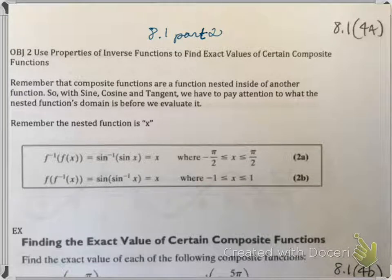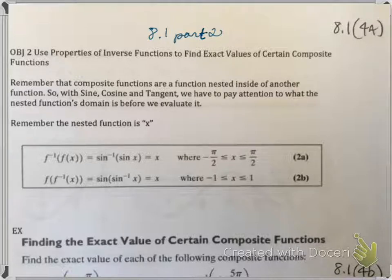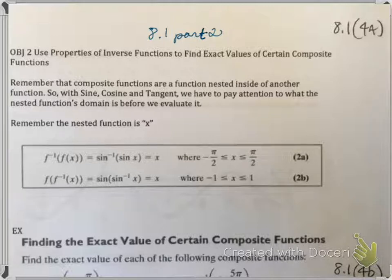Hello, this is 8.1 part two. We already covered pages one through three, so now we're on page four of this section, which is objective number two: using properties of inverse functions to find exact values of certain composite functions.